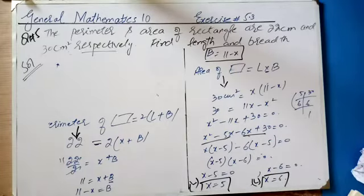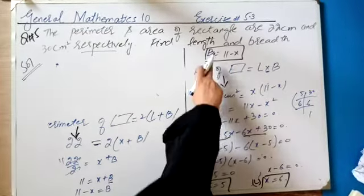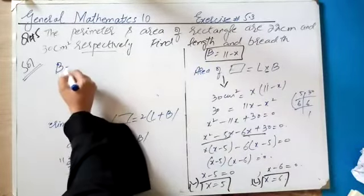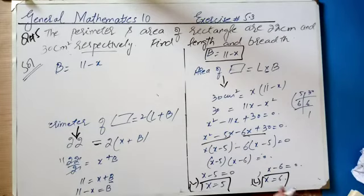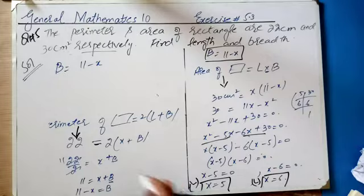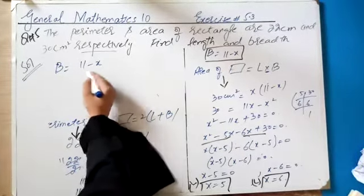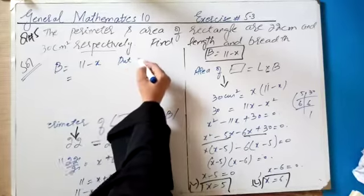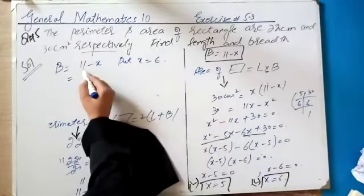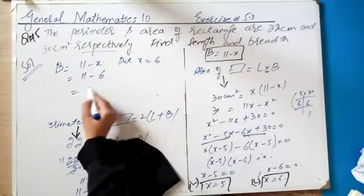We found both length and breadth. The formula for breadth we have is B = 11 − x. We take the greater value — since the longer side is length, we take x = 6. So B = 11 − 6 = 5.